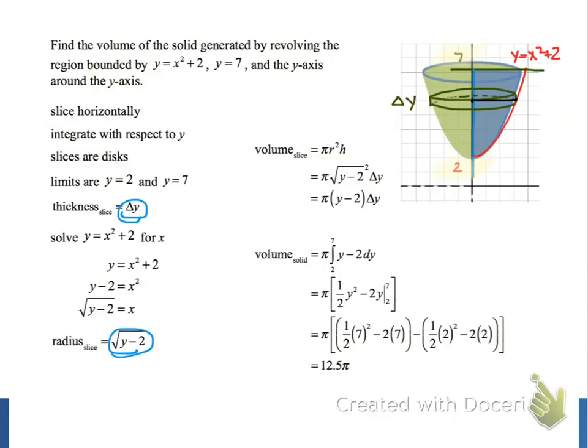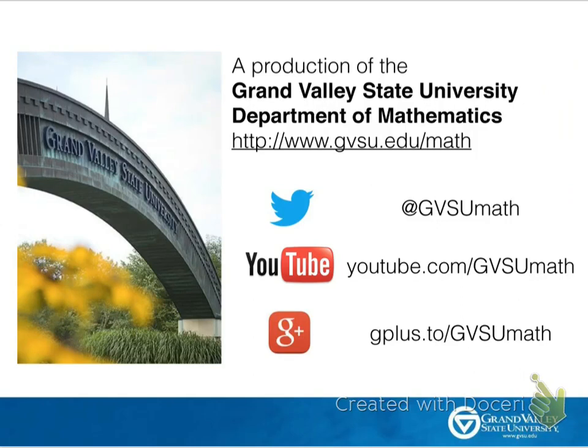When we're done with our calculations and simplified our result, our final result is 12.5 pi, which is the exact volume of our solid of revolution that we created by rotating a two-dimensional region around the y-axis. Thanks for watching!